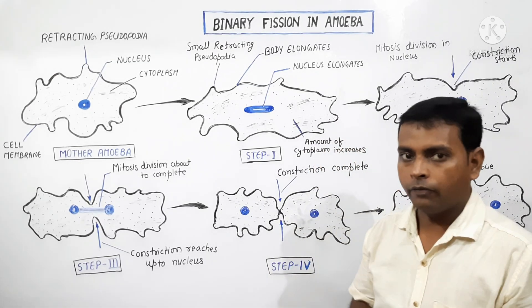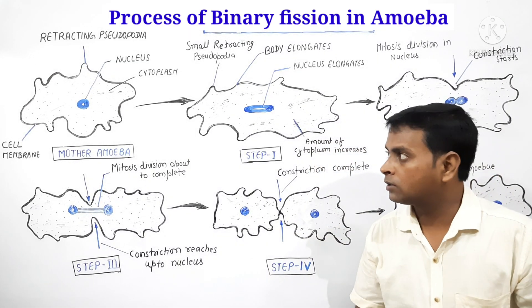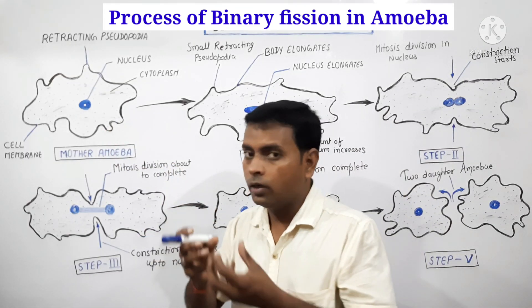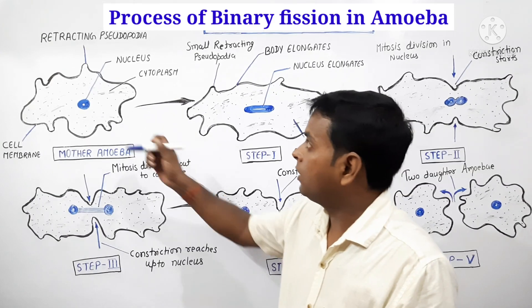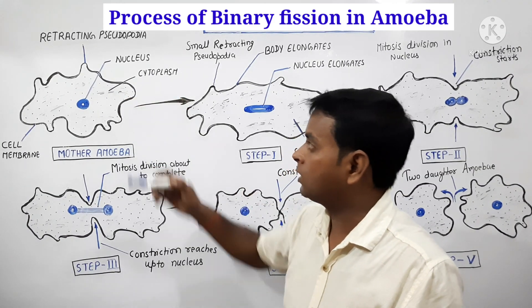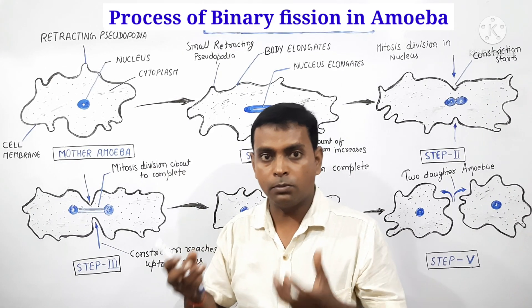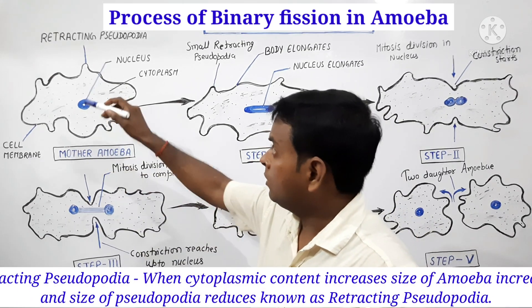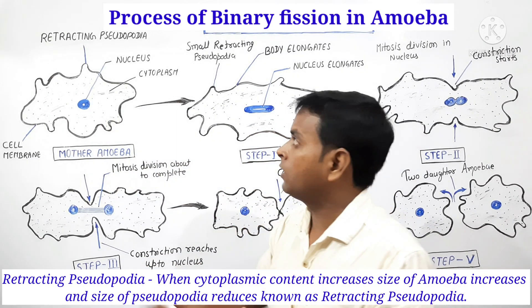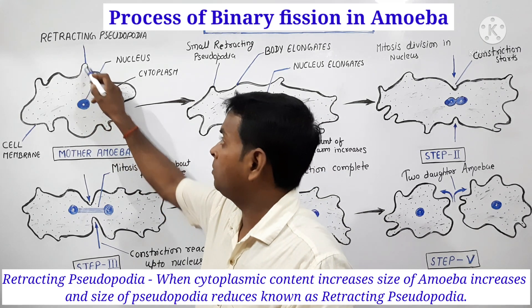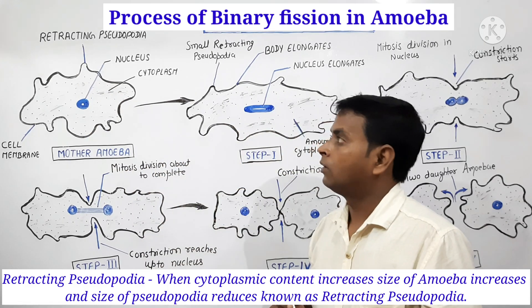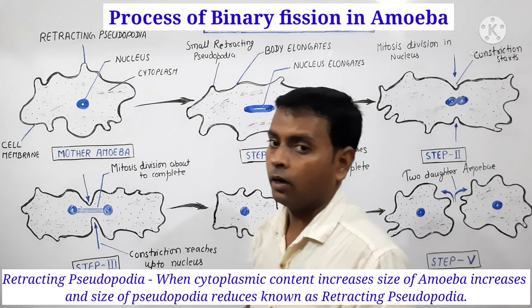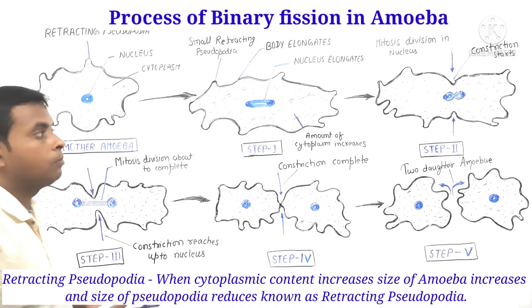In amoeba, asexual reproduction is generally followed by the process of binary fission. Before starting the process of binary fission, the amoeba starts to increase its size by increasing its cytoplasm and cytoplasmic contents, that is, cell organelles. Their volume becomes increased, and the pseudopodia begin to decrease. These are now known as retracting pseudopodia.